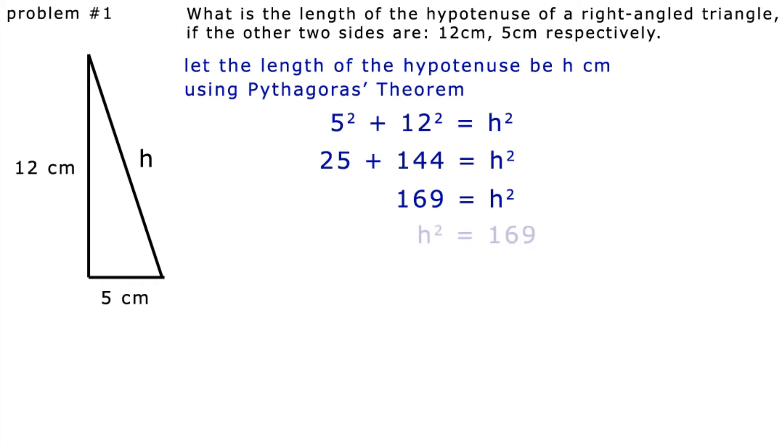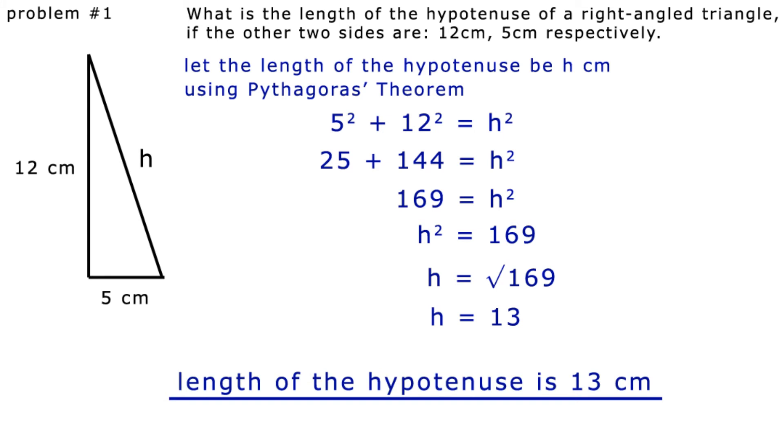Turning the equation around to have the h squared on the left. h squared equals 169. Taking square roots on both sides, we have h is equal to the square root of 169. So h is 13. So here is our answer. The length of the hypotenuse is 13 cm.